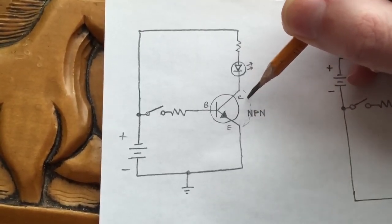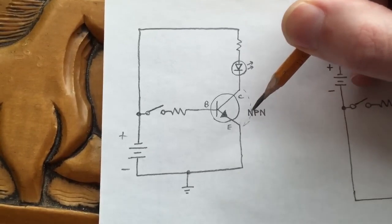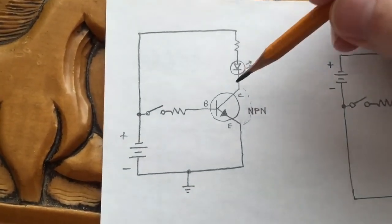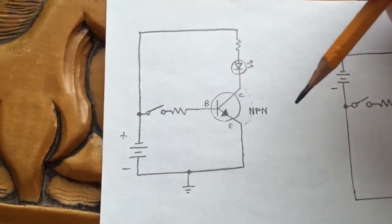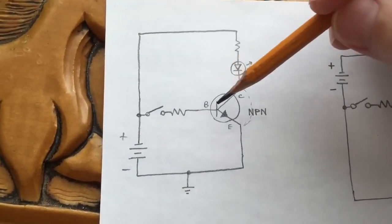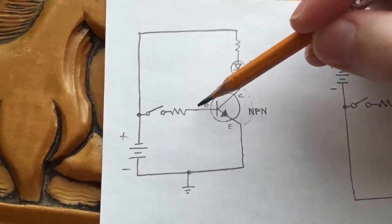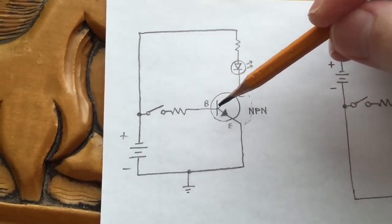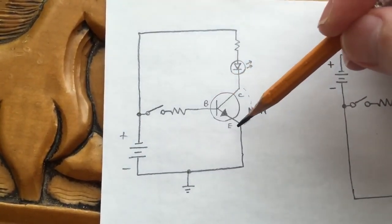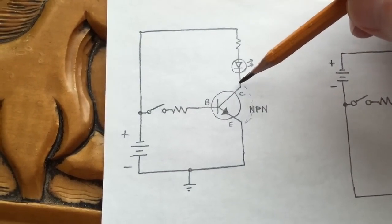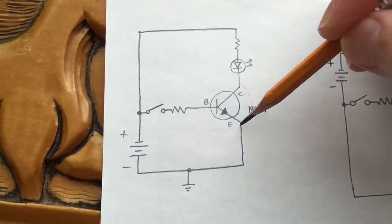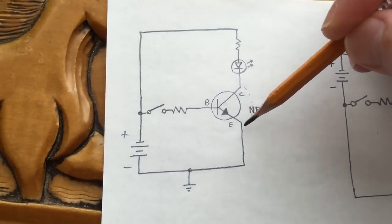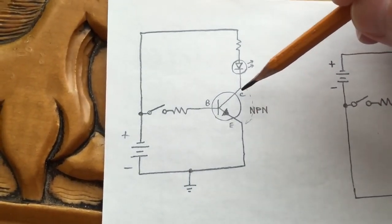It's like there was a jumper wire between collector and emitter — that's what happens when the transistor is turned on. When we stop the current flow into the base, the transistor turns off, and the imaginary jumper wire between collector and emitter disappears, leaving an open circuit.